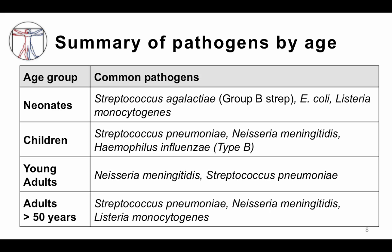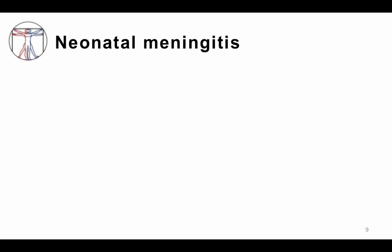When thinking about pathogens causing meningitis, we tend to think about it in terms of age. In neonates, the common pathogens are Group B Strep, E. coli, and Listeria. In younger children, it's Streptococcus pneumoniae and Neisseria meningitidis — and outside the U.S., and in the past in the U.S., Haemophilus influenzae type B. In young adults, Neisseria meningitidis and Strep pneumo. In adults particularly over age 50, we think about Streptococcus pneumoniae, Neisseria meningitidis, and Listeria monocytogenes. We'll come back to this and discuss in more detail.